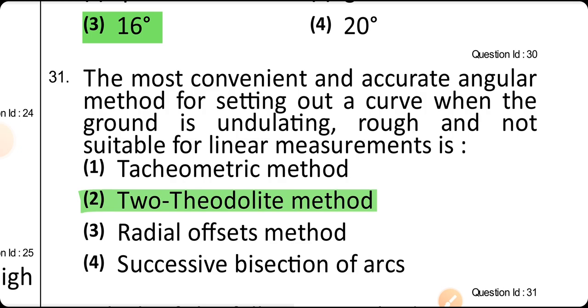The most convenient and accurate angular method for setting out a curve when the ground is undulated, rough, and not suitable for linear measurement is the two-theodolite method.